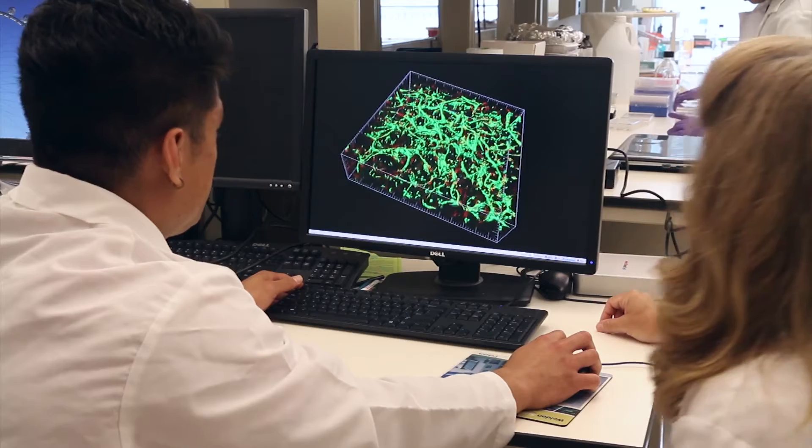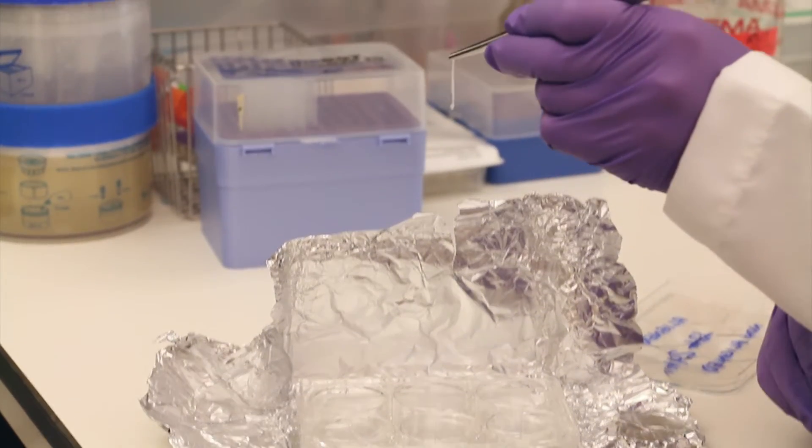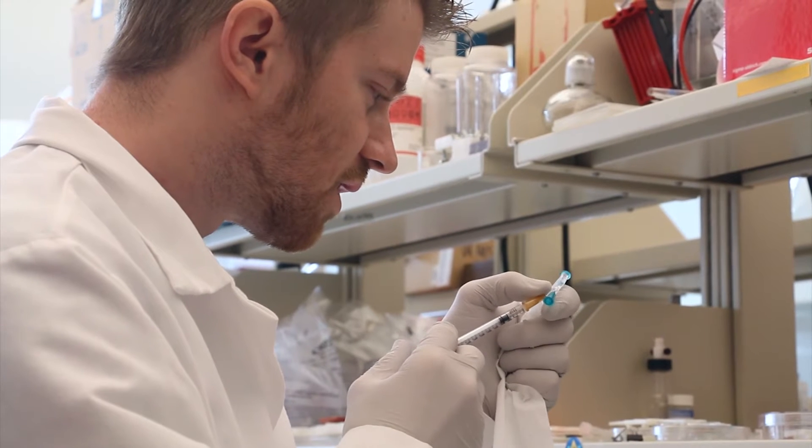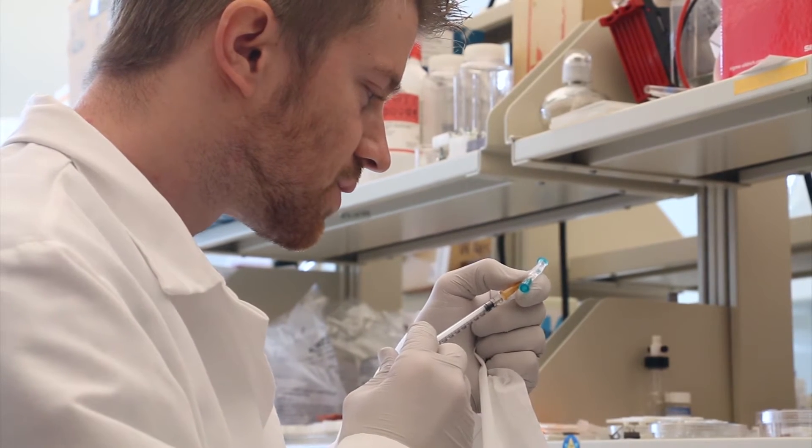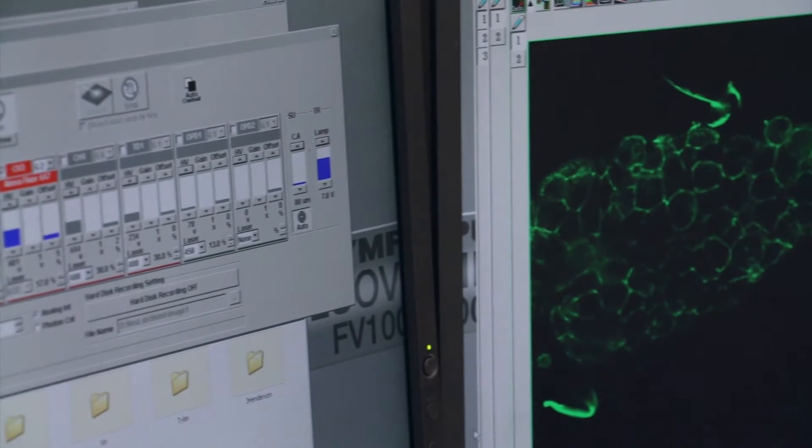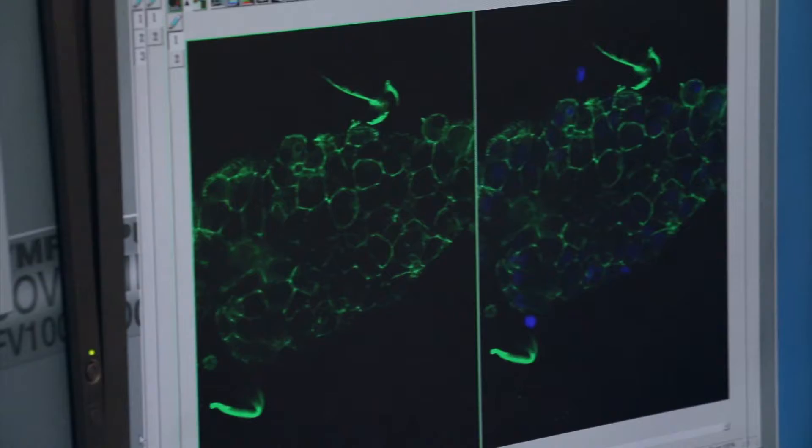For example, you can take naive stem cells and guide them to turn into adipose or fat tissues. You can then design the material to instruct them to turn into bone. This really brings engineering design to tissue engineering and regenerative medicine.